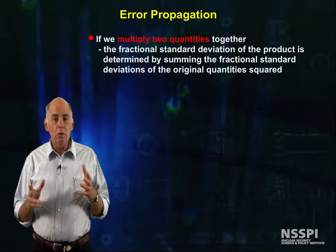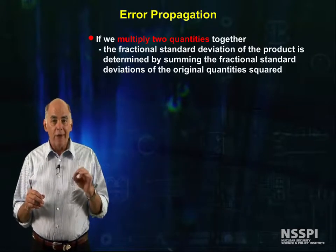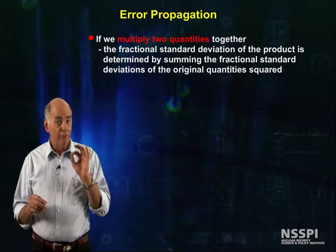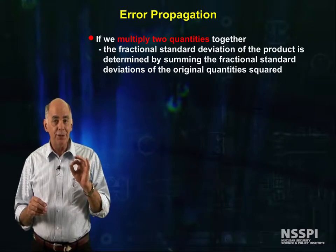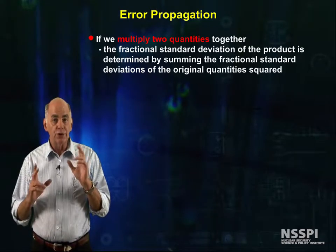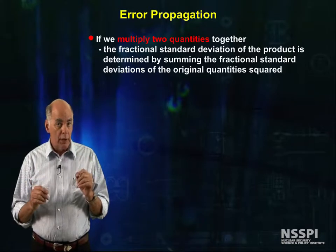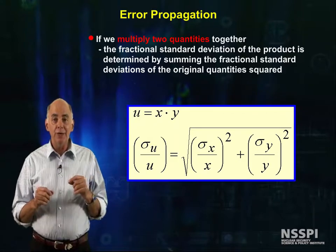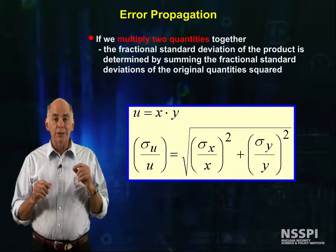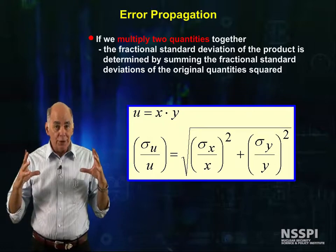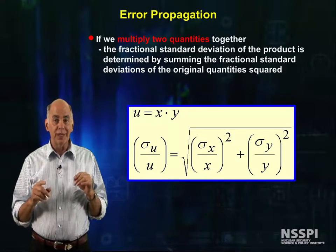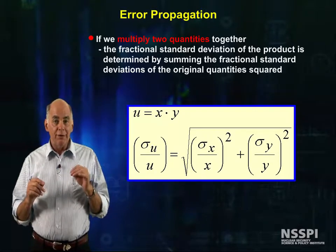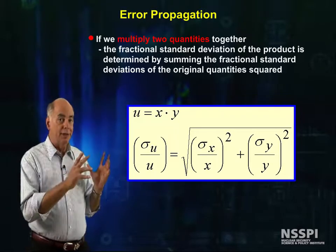If we multiply two quantities together, the fractional standard deviation of the product is determined by summing the fractional standard deviations of the original quantities squared. If u equals x times y, then sigma_u divided by u, quantity squared, equals sigma_x divided by x, quantity squared, plus sigma_y divided by y, quantity squared.